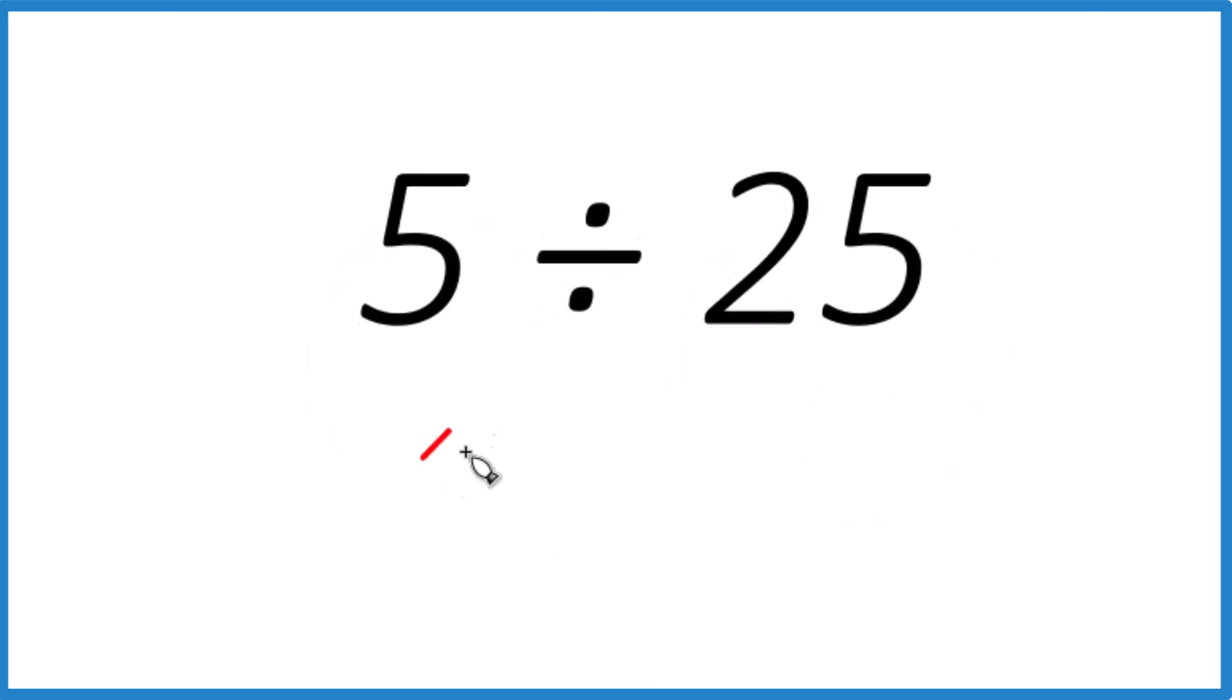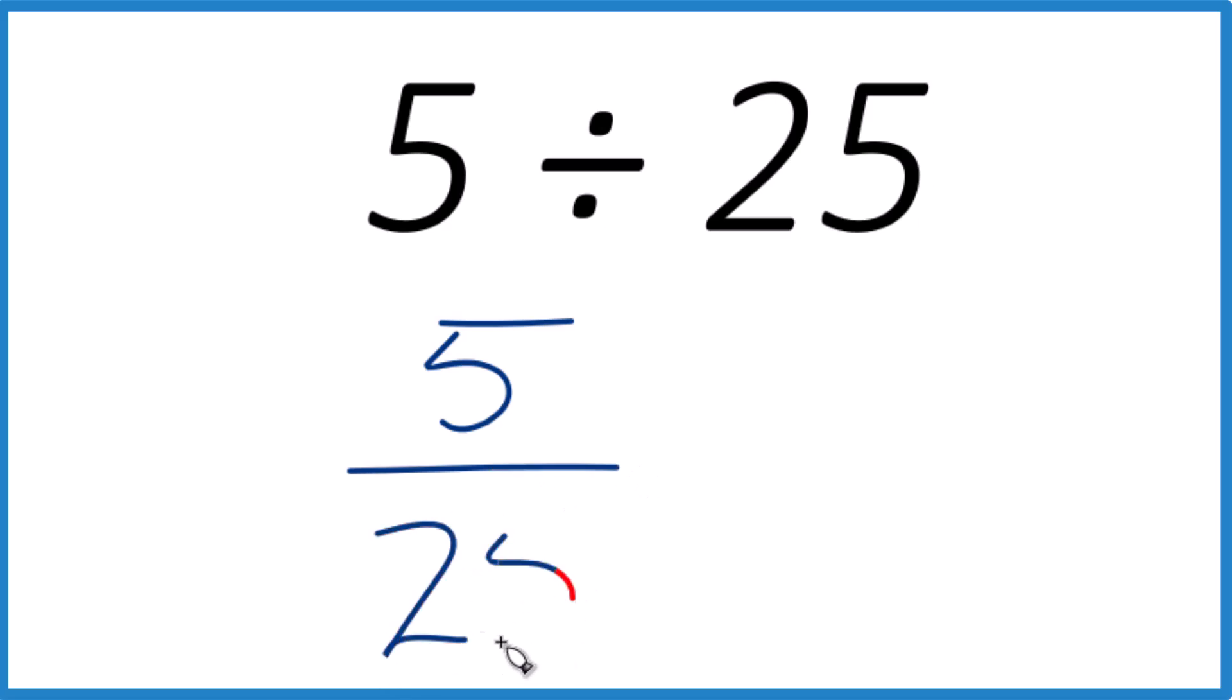We're talking about 5 over 25. How many times does 25 go into 5? Since 5 is smaller than 25, we're going to end up with a number less than 1, a decimal.